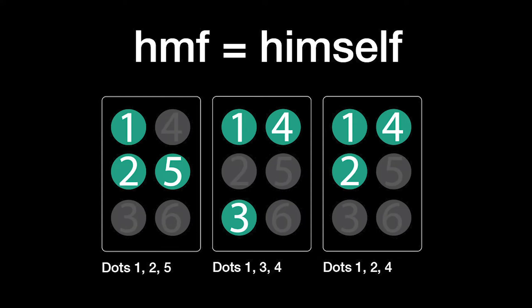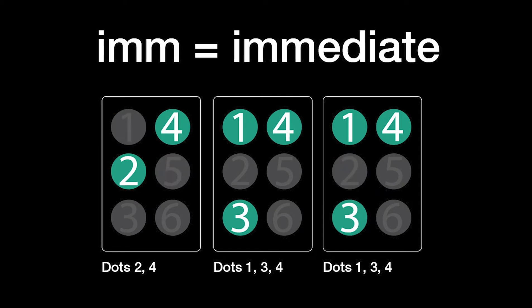Himself is H-M-F: dots 1, 2, and 5, plus dots 1, 3, and 4, plus dots 1, 2, and 4. Immediate is I-M-M: dots 2 and 4, plus dots 1, 3, and 4, plus dots 1, 3, and 4.